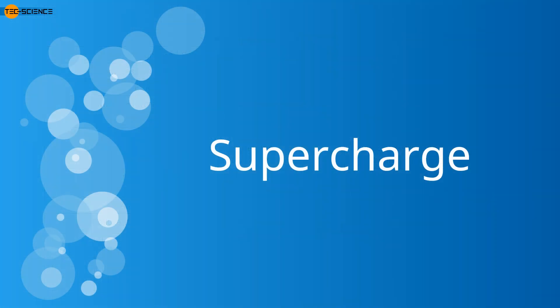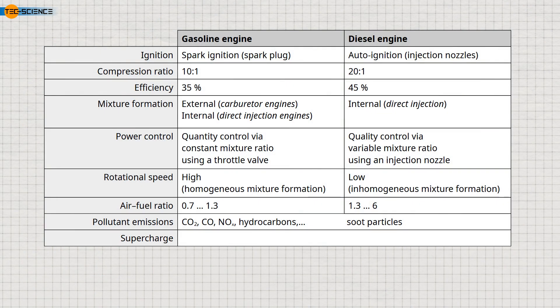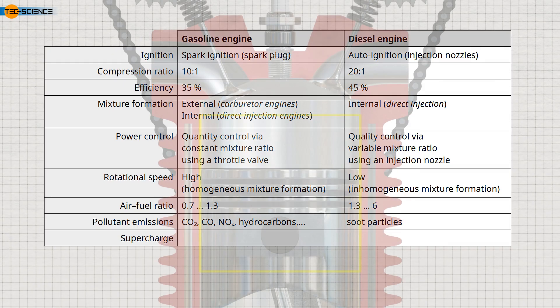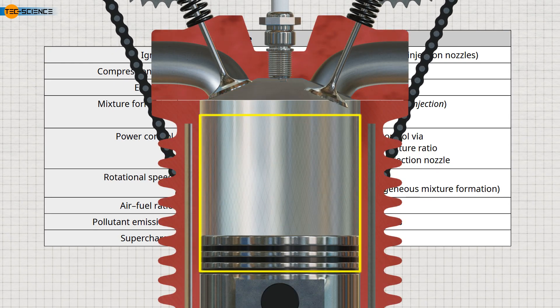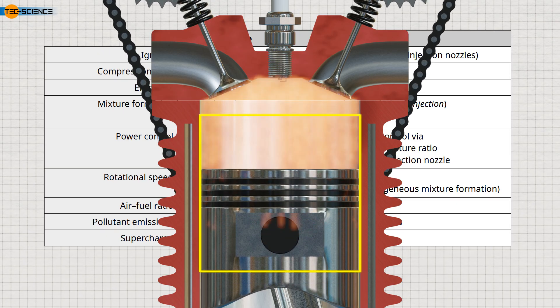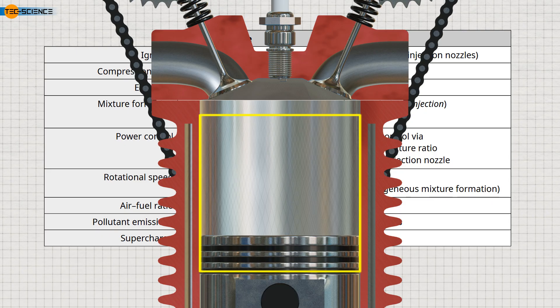The performance of an engine is determined by the amount of combustible fuel that enters the cylinder. The more fuel is burned, the more heat is released, which can ultimately be converted into work. A key factor here is the size of the engine's displacement, as a larger displacement means more charge in the cylinder and therefore more fuel can be ignited. However, the displacement cannot be increased indefinitely, as larger engines would require too much space and become too heavy.